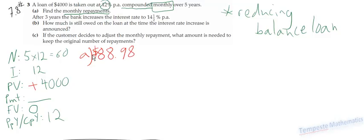Now, on to part B. Part B is where things get a little bit trickier. It's asking us how much is still owed on the loan at the time the interest rate is increased. Because after three years, the bank is increasing the interest rate to 14.5%.